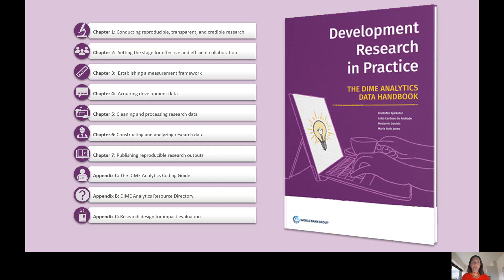Chapter 4 covers data acquisition. It discusses data licensing for secondary data, provides a deep dive on collecting high quality primary electronic survey data, and offers best practices for data security at all stages. Chapter 5 covers data processing, from constructing tidy data sets, to checking data quality, de-identifying personal data, and cleaning data in preparation for analysis.